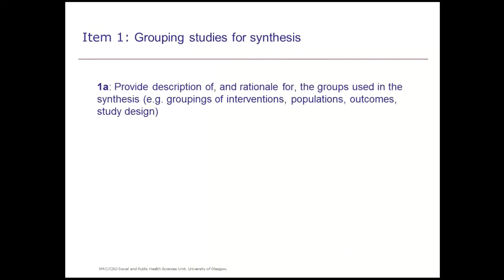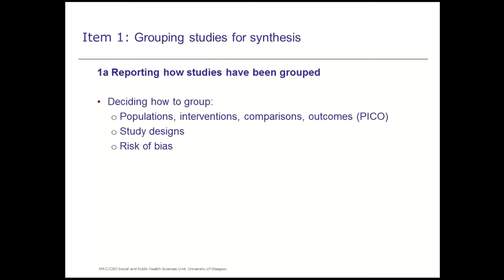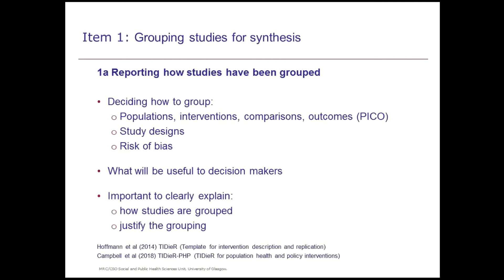Item 1a says: provide a description of and rationale for groups used in the synthesis. When thinking about grouping studies, we decide how to group by the PICO or by considering study design and risk of bias. We also think about what's going to be useful for the people who will actually use the review. It is important to clearly explain how we have grouped the studies and to justify why it makes sense to group in that way.